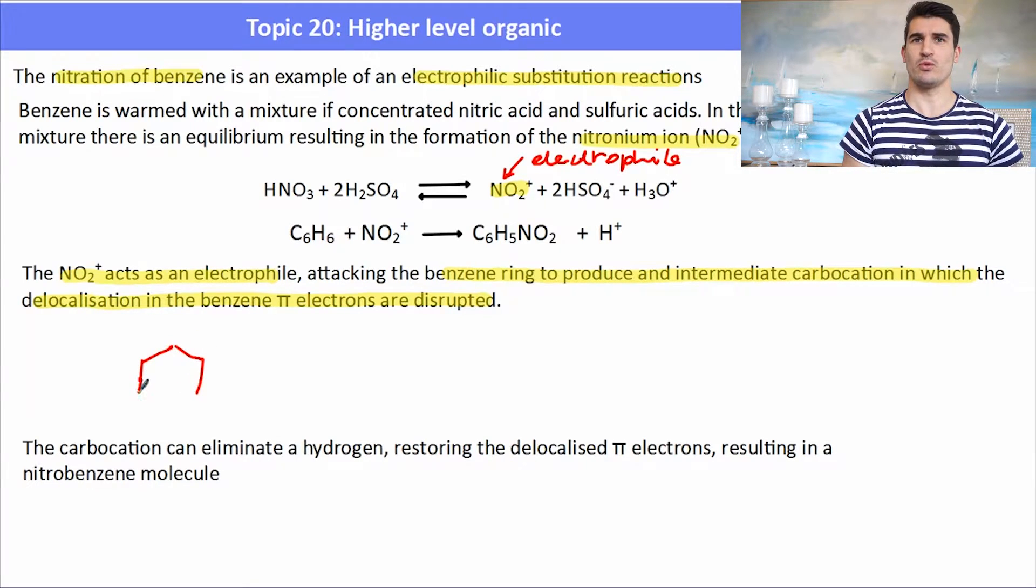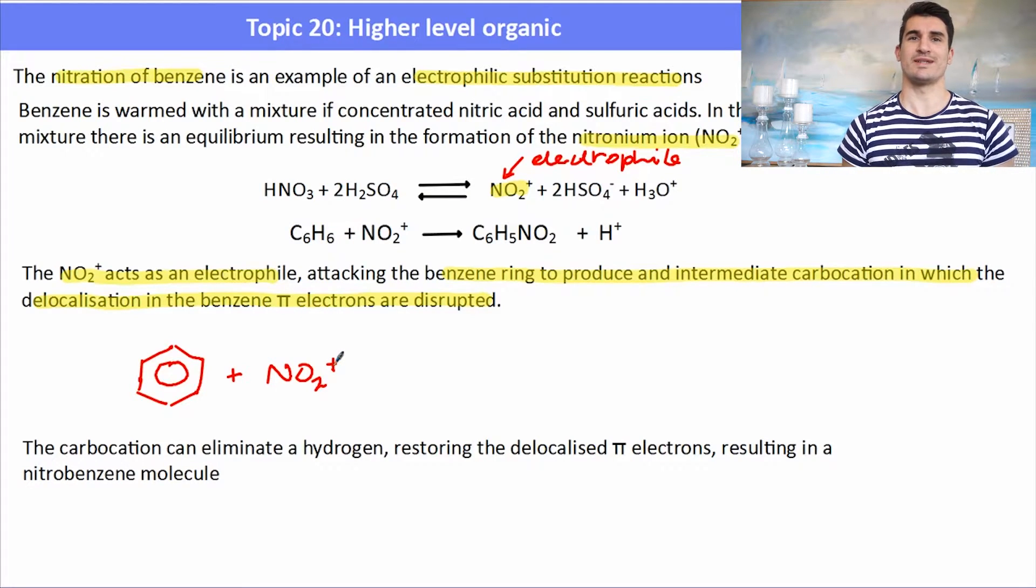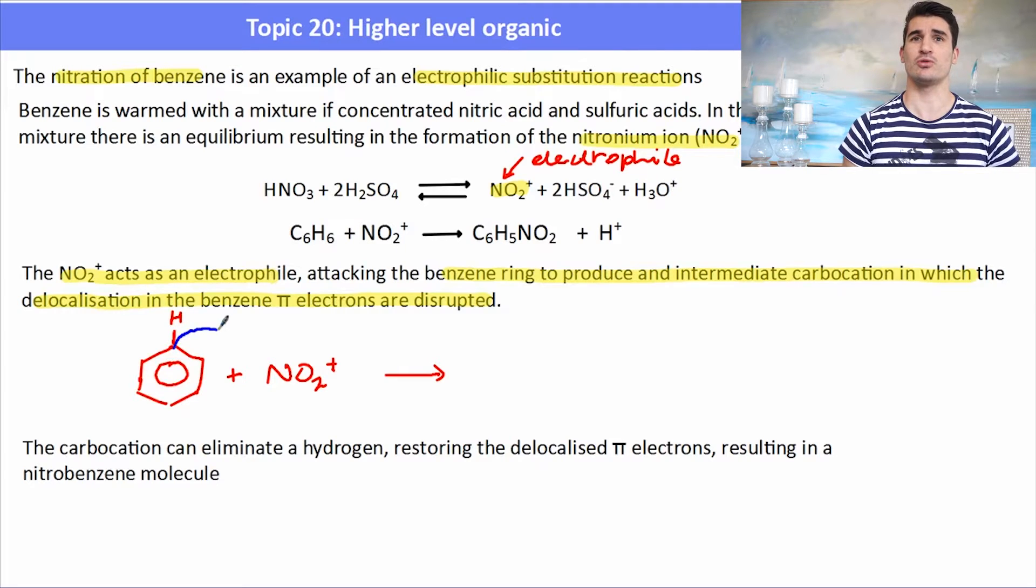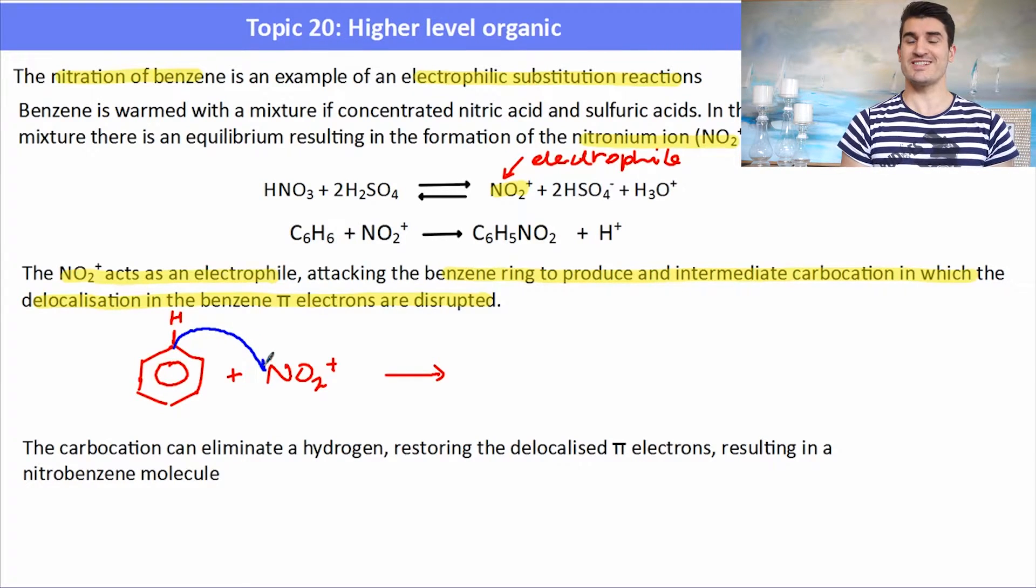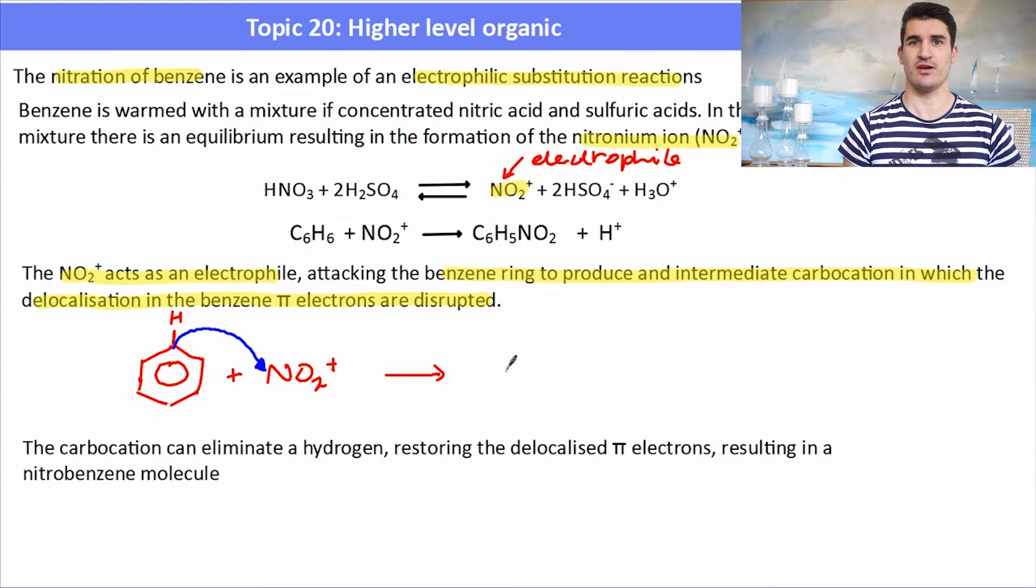Here we have our benzene with its delocalization inside the ring. When we add in our electrophile, our nitronium ion, that is able to attack that high electron density of the ring. Now I'm showing the hydrogen here because that's going to be involved in the leaving group. That hydrogen will leave, so the electrons in the ring are attracted towards that electrophile which are seeking electrons.